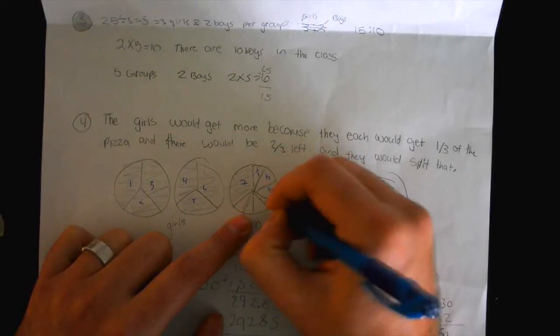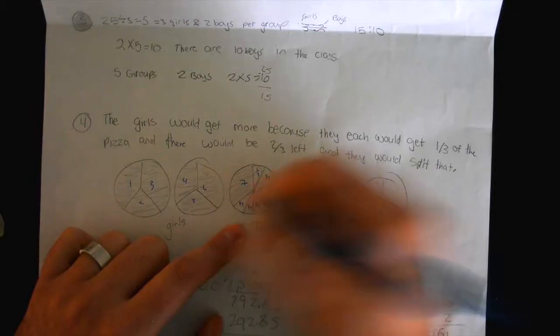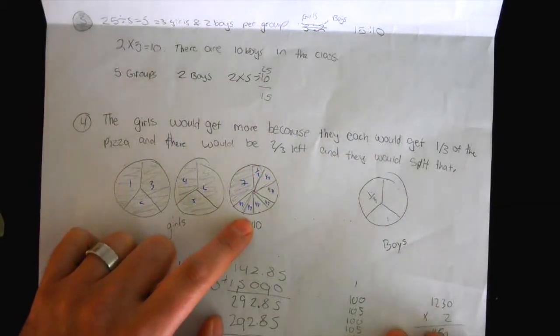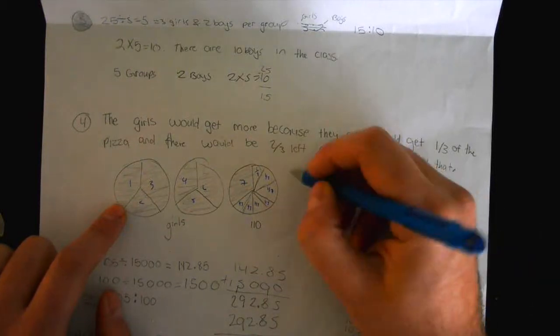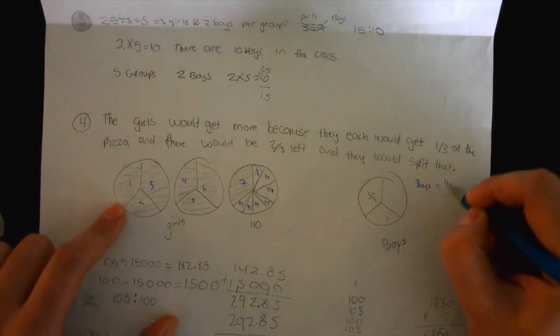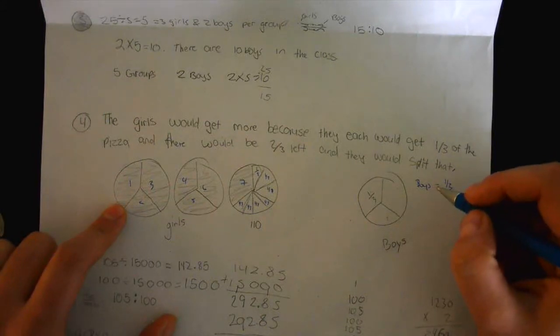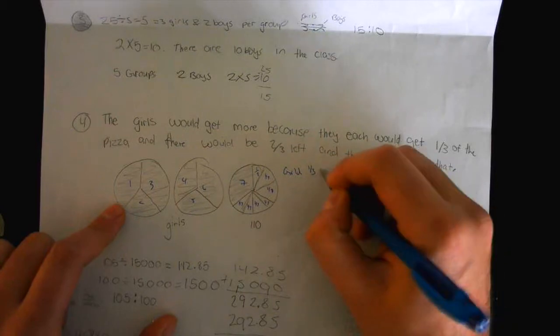So now the girls get, so the boys get one-third of a pizza, right? Okay, the girls get one-third plus a seventh. The girls get more pizza.